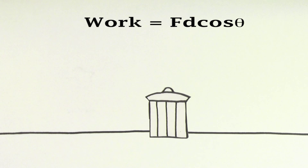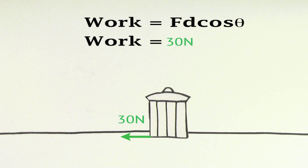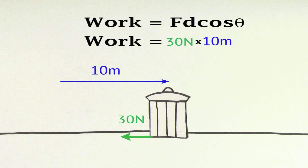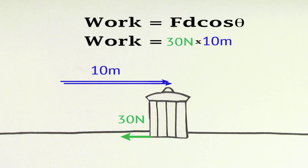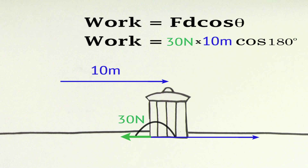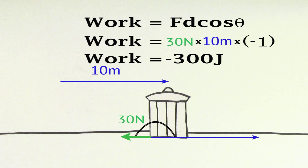To find the work done by friction, we'll plug in the size of the force of friction, which is 30 newtons. The displacement is still 10 meters. And since the force of friction points in the opposite direction as the displacement, the angle between the force of friction and the displacement is 180 degrees. Since cosine of 180 is negative 1, the work done by the force of friction is negative 300 joules.